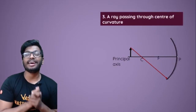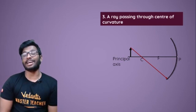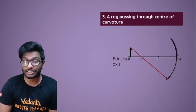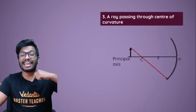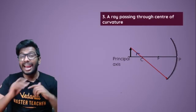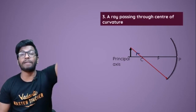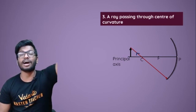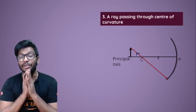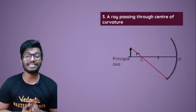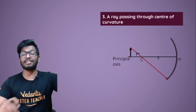The third case is where the ray of light is passing through the center of curvature. After reflection it will bounce back in that exact same direction — it won't get reflected in a different direction. It hits the surface and goes straight back along that exact same line through the center of curvature itself.